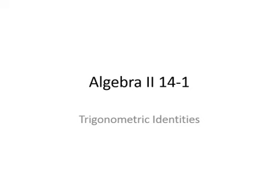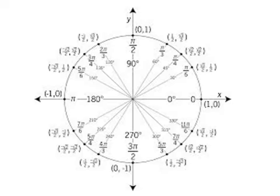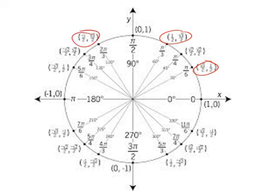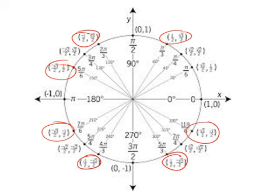What we're going to be looking at is the relationships between our trig functions, and we're going to look at one main one that's going to help us with everything. If you look at our unit circle, what we've discussed previously is that you see there are some relationships, numbers repeating themselves — they're either just switched or the signs are changed, something like that.